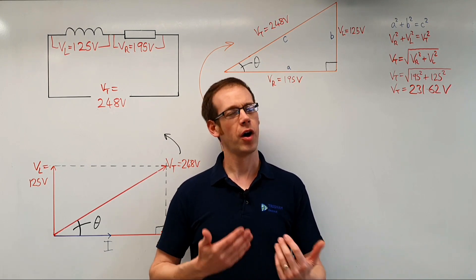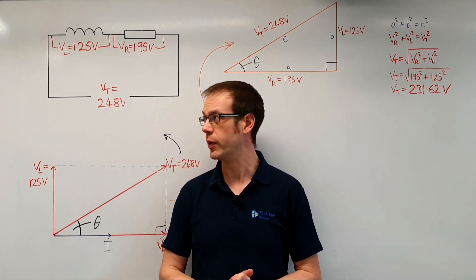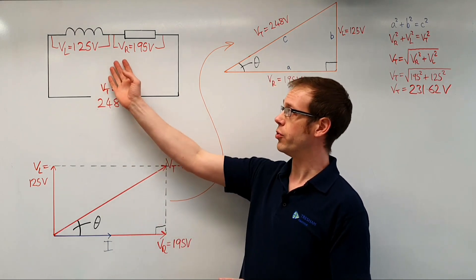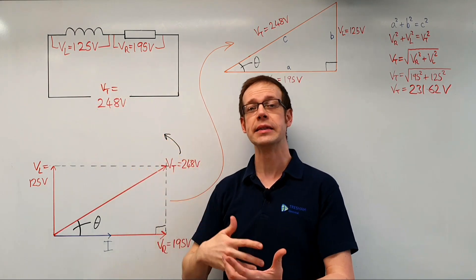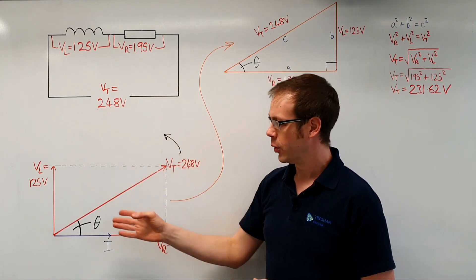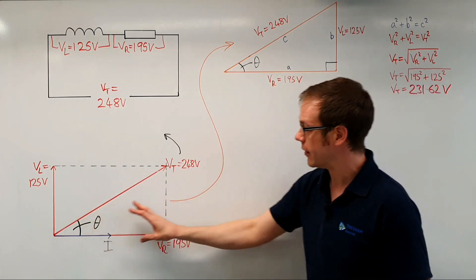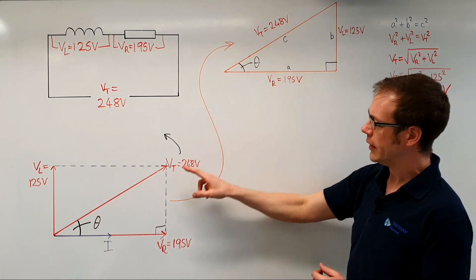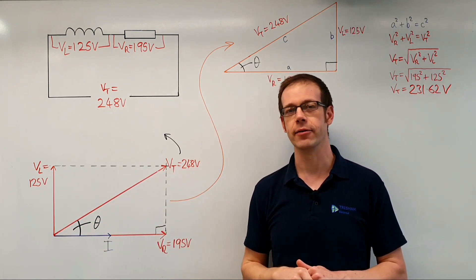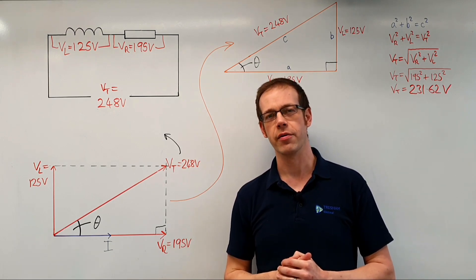How does this subject of opposition to current flow tie in with the information we've been looking at in previous videos? If you remember, we drew a circuit diagram to represent what's going on inside a fluorescent light fitting. We measured voltages, produced a phasor diagram, and extracted a right-angle triangle buried within that phasor diagram.